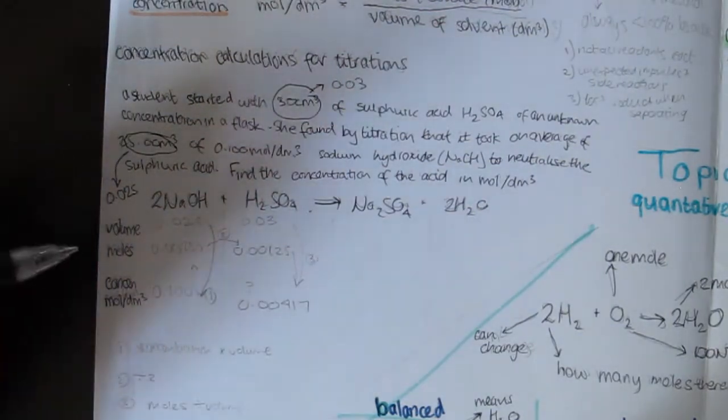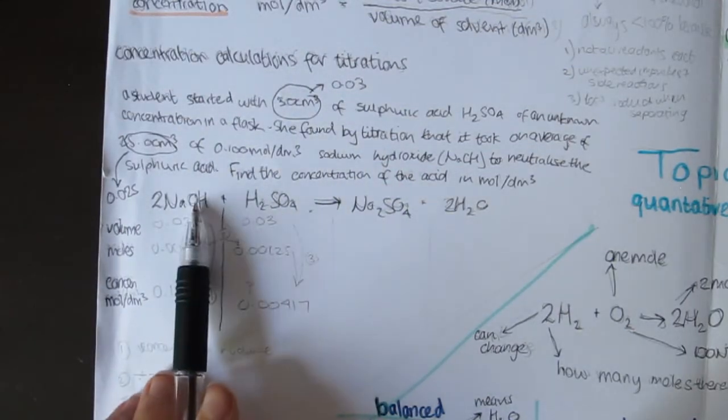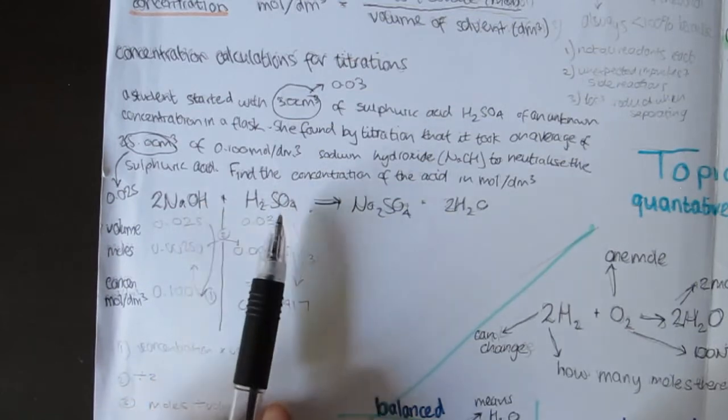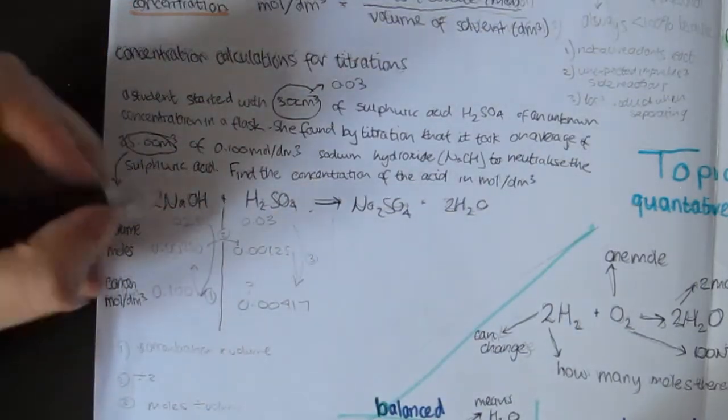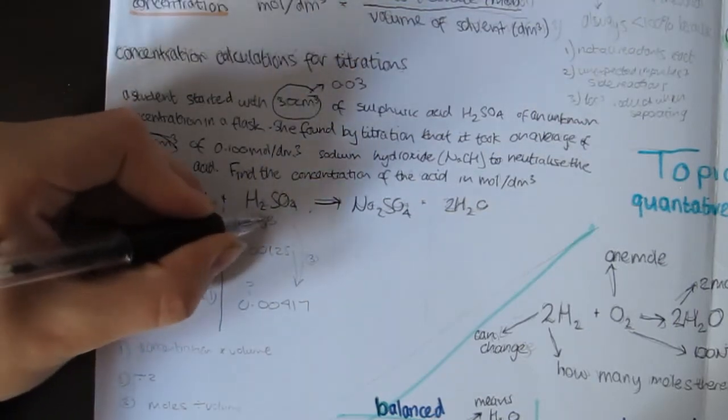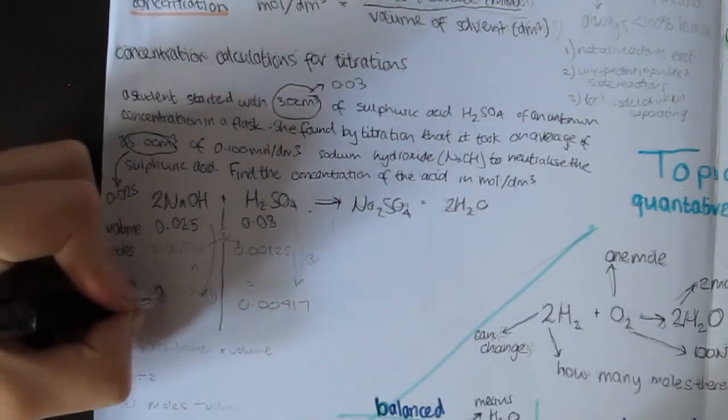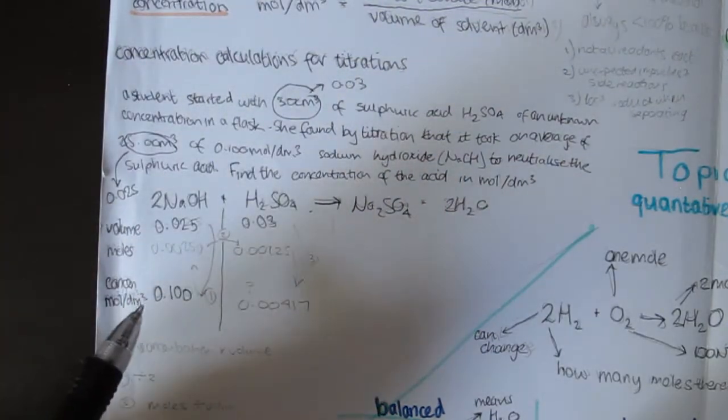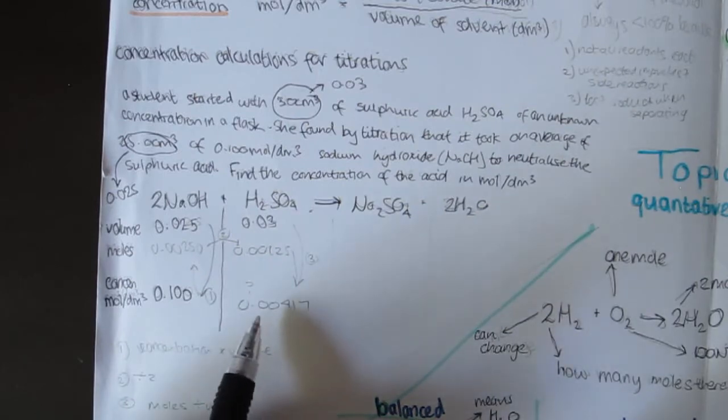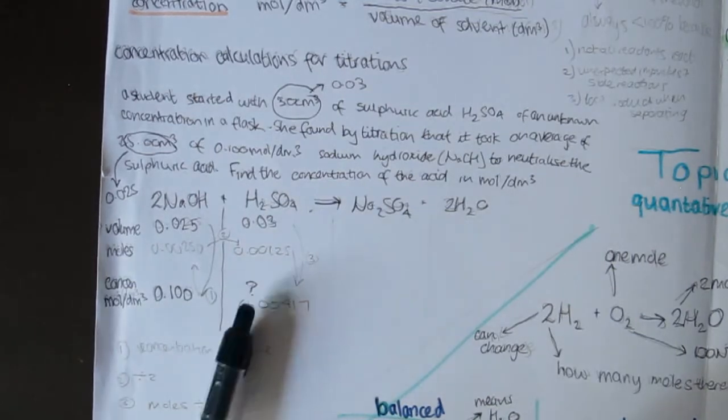So now, we need to put into the table the things that we know. So we know the volumes for the sulphuric acid and the sodium hydroxide. So it's going to be 0.025, 0.03. We know the concentration of the sodium hydroxide. And we know that we need to find concentration of the sulphuric acid. So for now, we're just going to put a question mark there.